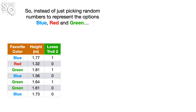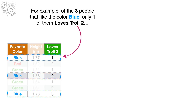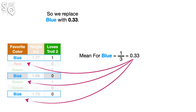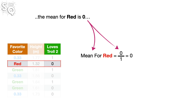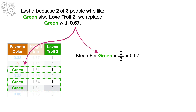So instead of just picking random numbers to represent the options blue, red, and green, we can calculate the mean value of the target — the thing we want to predict, which in this case is Love's Troll 2 — for each option. For example, of the three people that like the color blue, only one of them loves Troll 2. So the mean value for blue is 1 divided by 3, or 0.33, so we replace blue with 0.33. Likewise, because only one person likes red and they do not love Troll 2, the mean for red is 0, so we replace red with 0. Lastly, because two of three people who like green also love Troll 2, we replace green with 0.67.